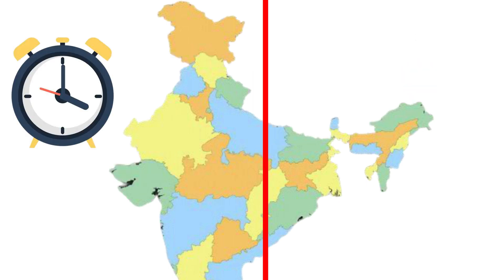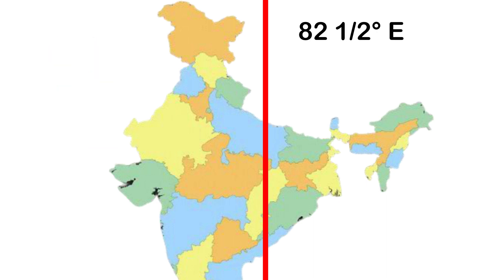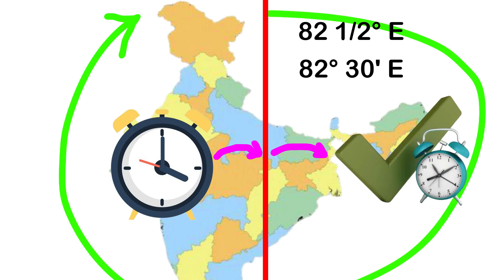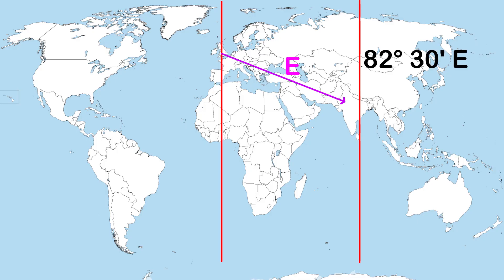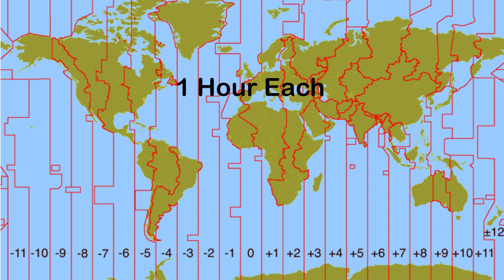It is therefore necessary to adopt the local time of the central meridian of a country as the standard time for the country. In India, the longitude of 82½ degrees east (82 degrees 30 minutes east) is the standard meridian. The local time at this meridian is taken as the standard time for the whole country, known as Indian Standard Time (IST). India, located east of Greenwich at 82 degrees 30 minutes east, is 5 hours and 30 minutes ahead of GMT. Some countries have a great longitudinal extent and have adopted more than one standard time — for example, Russia has as many as 11 standard times. The earth has been divided into 24 time zones of one hour each, with each zone covering 15 degrees of longitude.